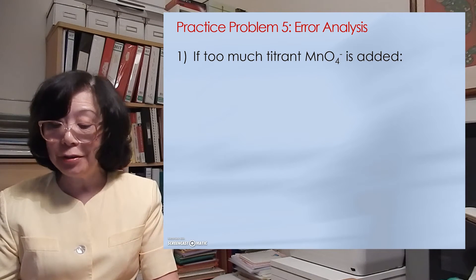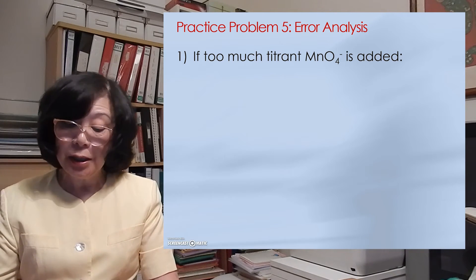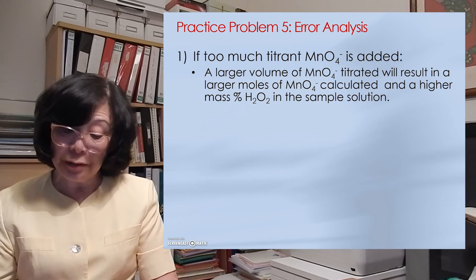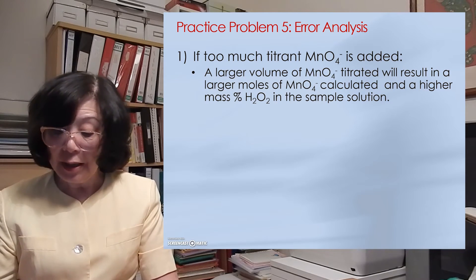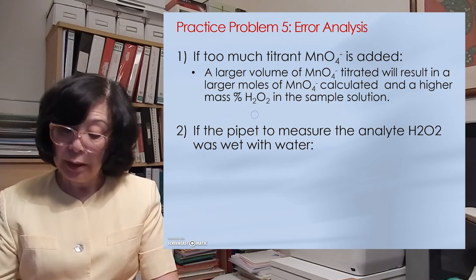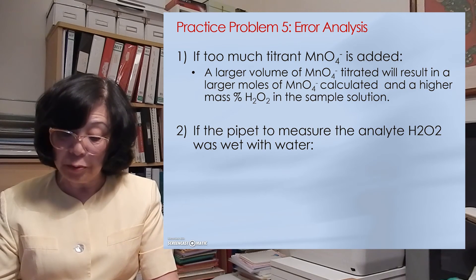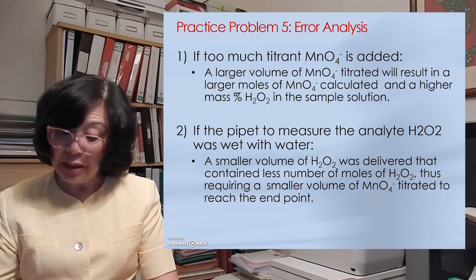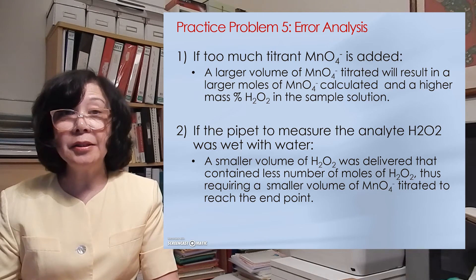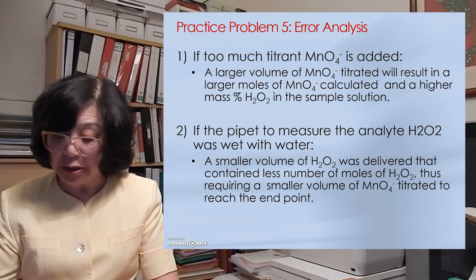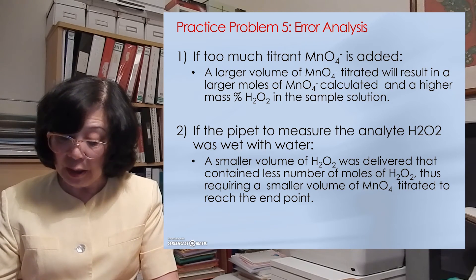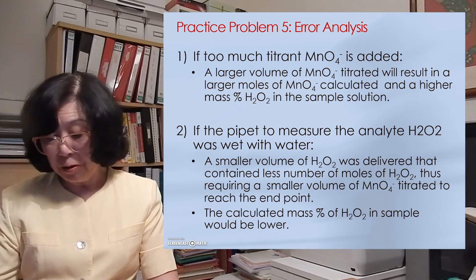What could cause a high or low percentage? If we titrated with too much permanganate — over-titration — that would yield a larger moles of permanganate calculated and therefore a higher mass percent of the peroxide in the sample. If a pipette was wet with water to begin with, I would have delivered a smaller volume of hydrogen peroxide, containing fewer moles, requiring a smaller volume of permanganate for the titration — and the calculation would yield a lower mass percent.